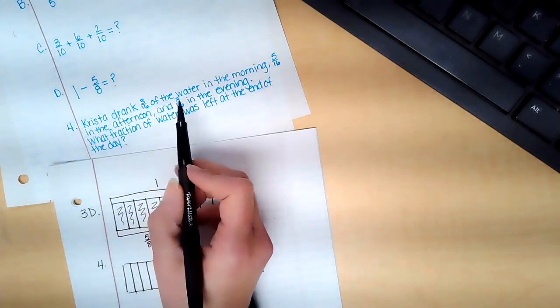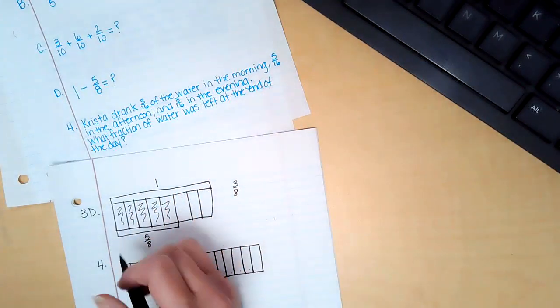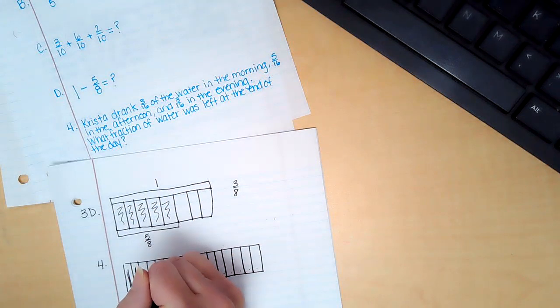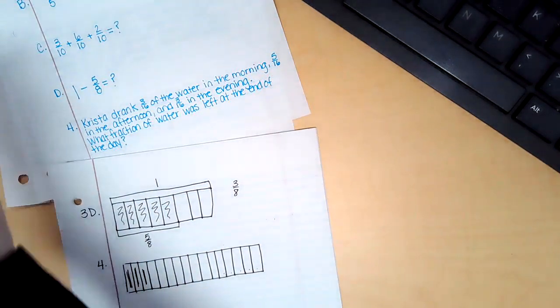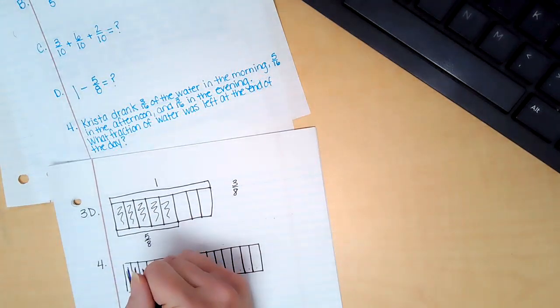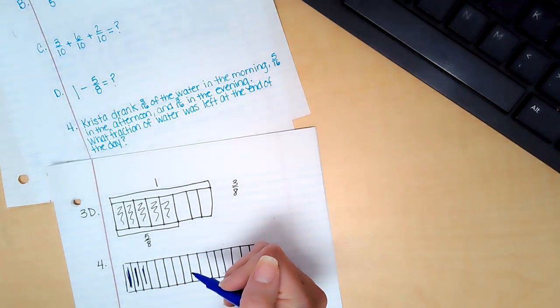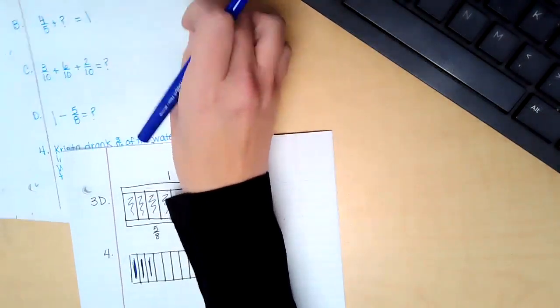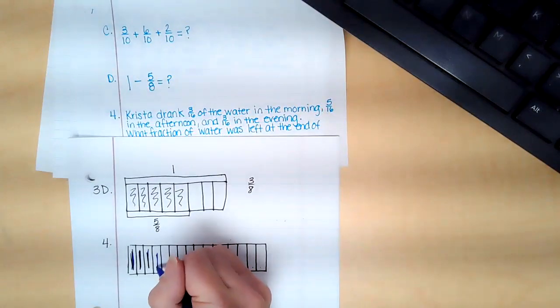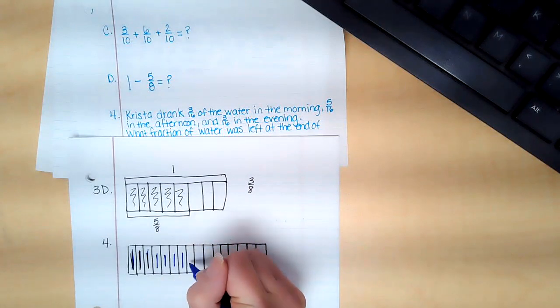Okay, so it said that she drank three sixteenths of the water in the morning, so that'd be like one, two, three. Actually, let me use a different color so it's not confusing. Okay, and then in the afternoon, so one, two, three, four, five.